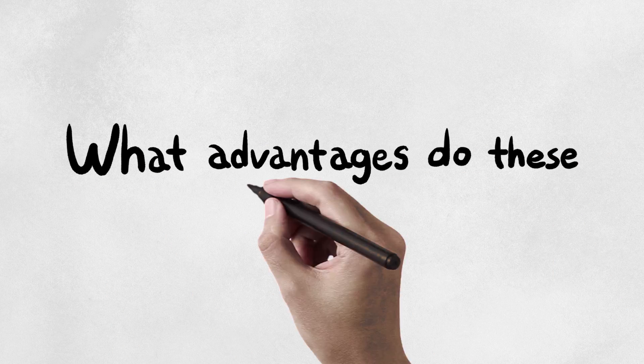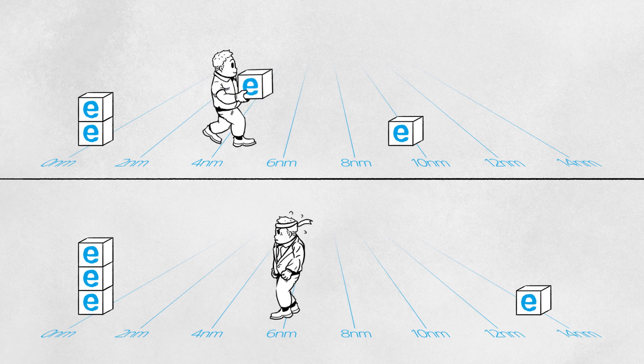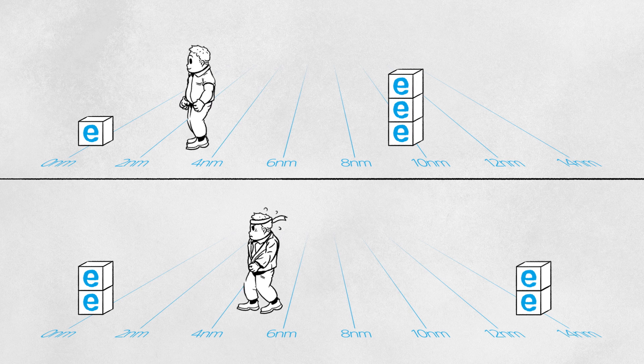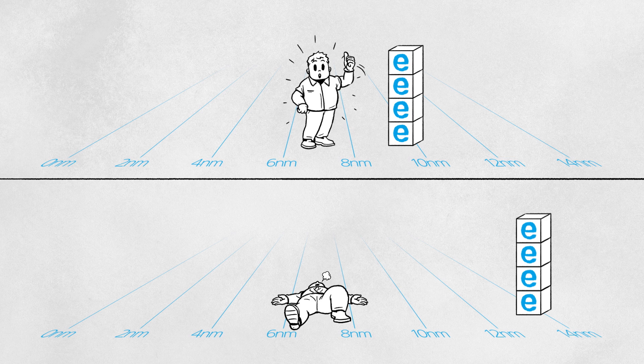What advantages do these finer circuits offer? The smaller the width of the circuit, the shorter the traveling distance of the electron is, improving the efficiency as well as the performance of the chip.